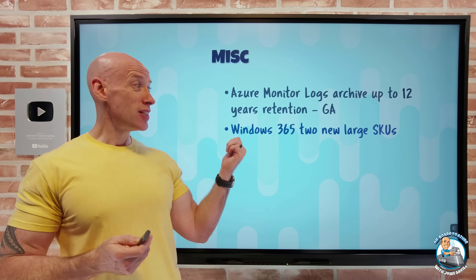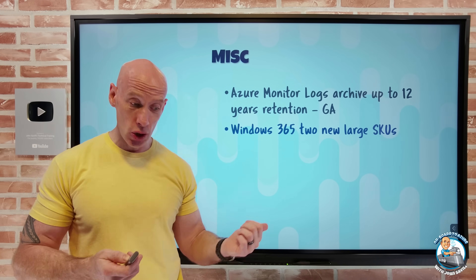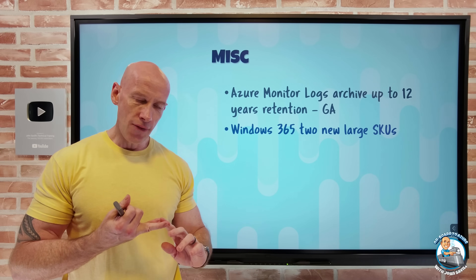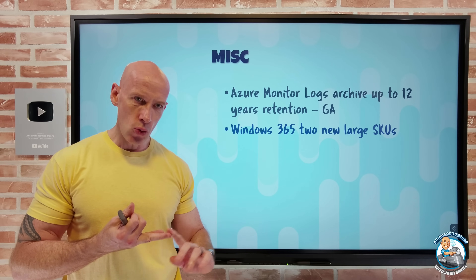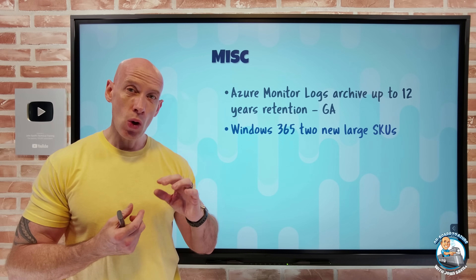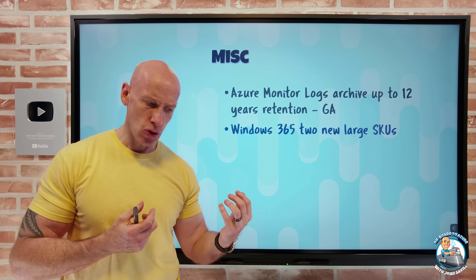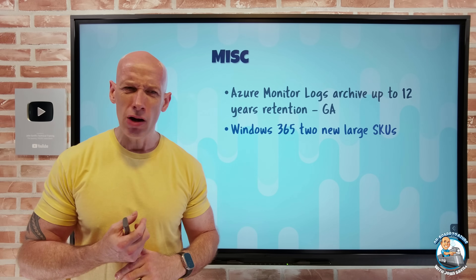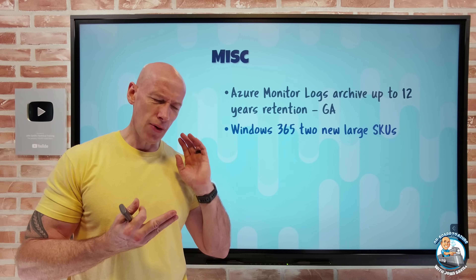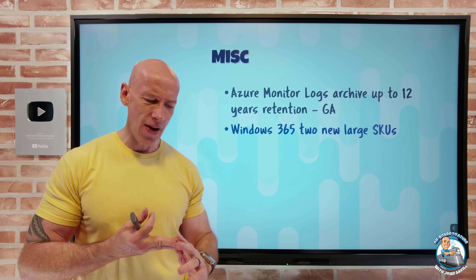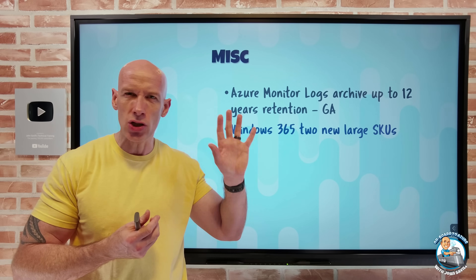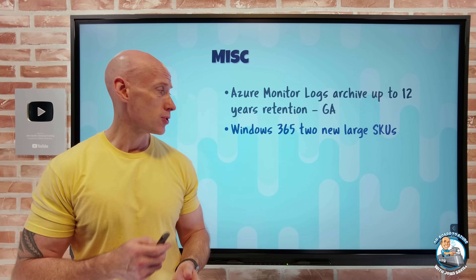Windows 365 has two new large SKUs: 16 virtual CPUs with 64 GB of RAM, with either 512 GB or 1 TB of storage. They also added new gallery images around Windows 11 Preview with 365 apps and OS optimizations — the 23H2 version.